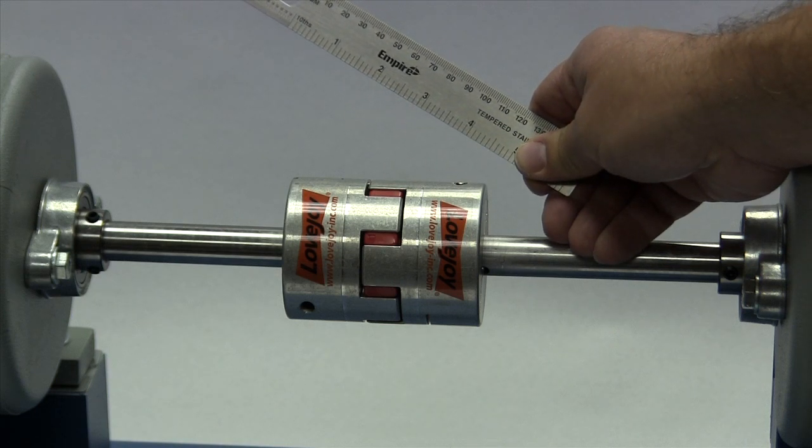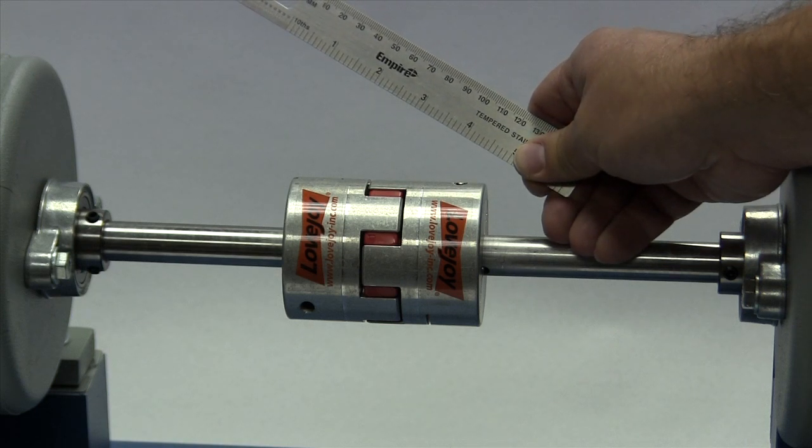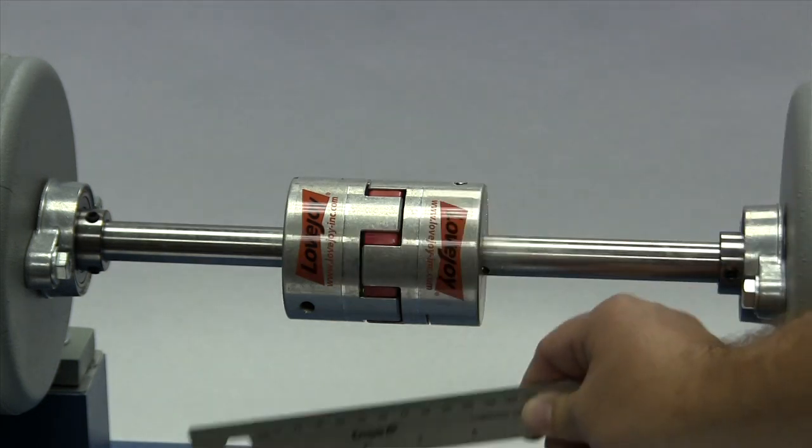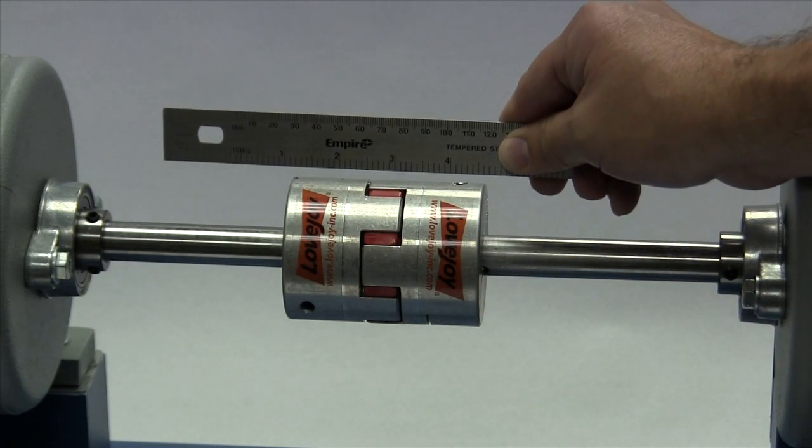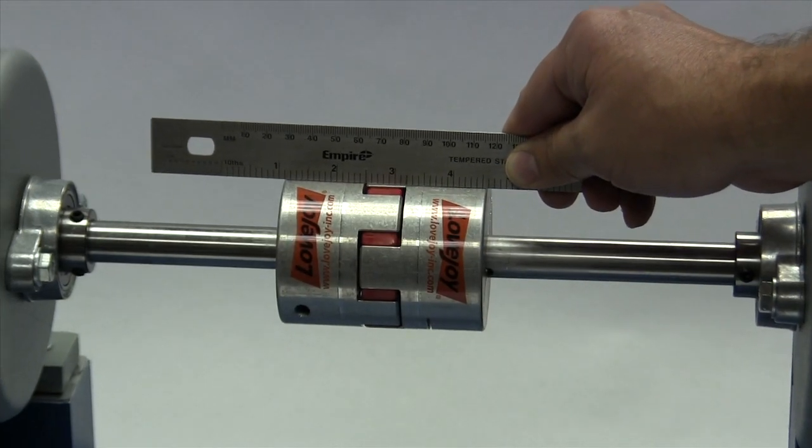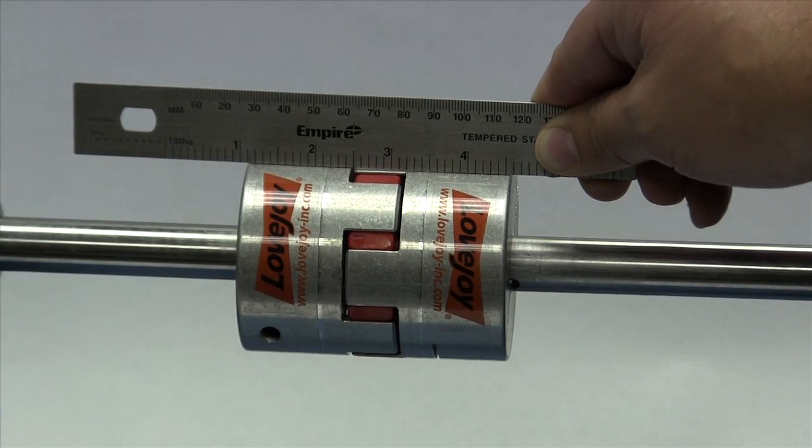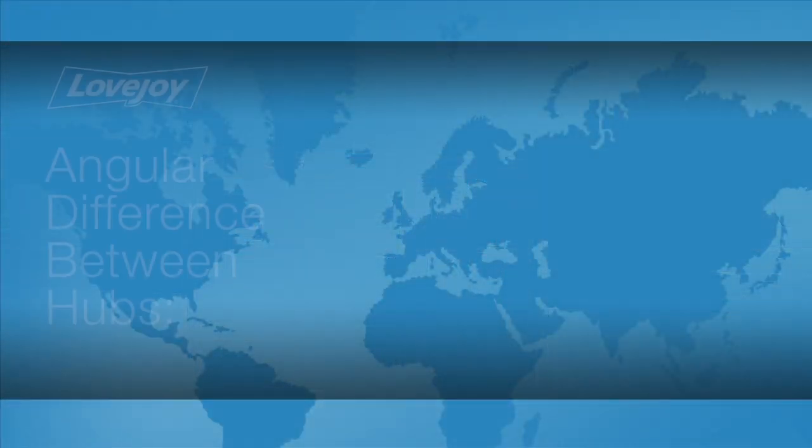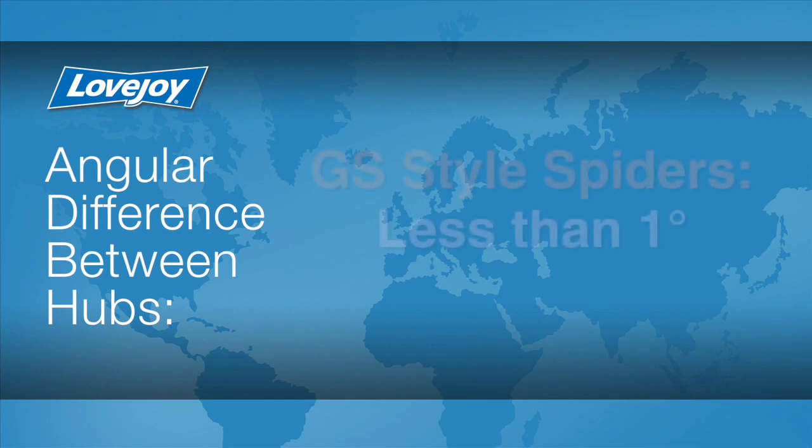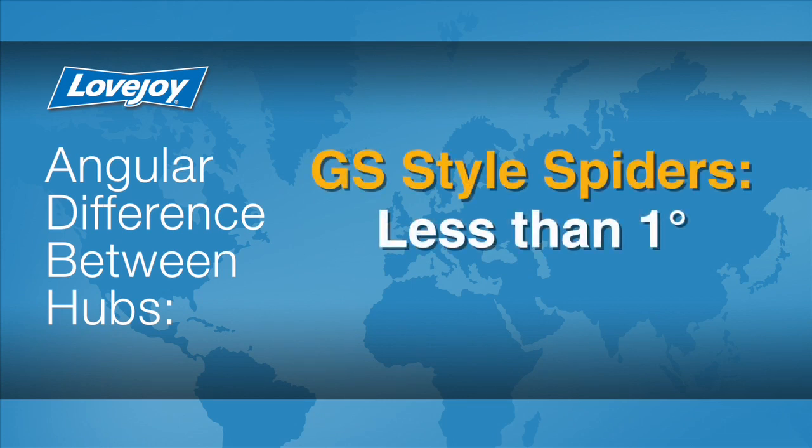If all sides of the coupling are accessible, check the alignment at four locations: 3 o'clock, 6 o'clock, 9 o'clock and 12 o'clock without rotating the shafts. The offset between the two hubs must be less than 1/64th of an inch to prevent damage to the coupling. The angular difference between the two hubs should be less than 1 degree for GS-style spiders.